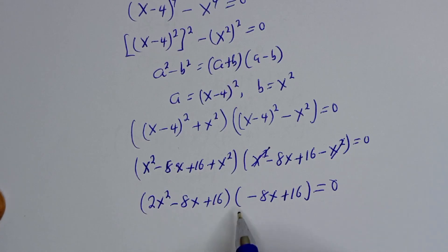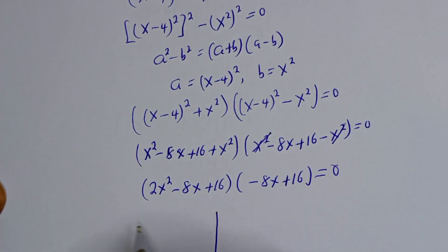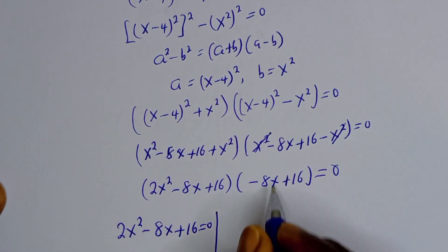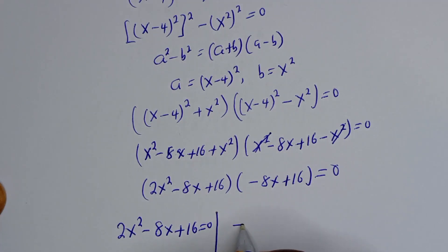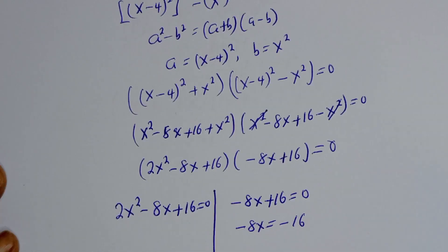There are two cases here. The first case is 2S squared minus 8S plus 16 is equal to 0, and the second case is negative 8S plus 16 is equal to 0.